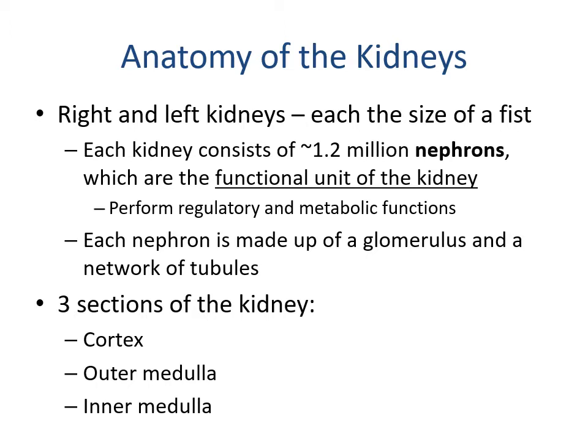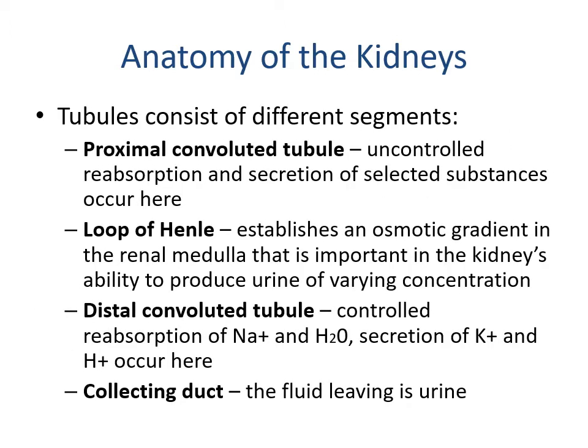The kidneys participate in a number of regulatory and metabolic functions. Each nephron is made up of a glomerulus and a network of tubules. The kidney has three main sections: the cortex, the outer medulla, and the inner medulla. The tubules consist of different segments: the proximal convoluted tubule, where there is uncontrolled reabsorption and secretion of selected substances; the loop of Henle, which establishes an osmotic gradient important for producing urine of varying concentration; the distal convoluted tubule, where controlled reabsorption of sodium and water and secretion of potassium and hydrogen ions occurs; and finally the collecting duct, where the fluid leaving is in the form of urine.